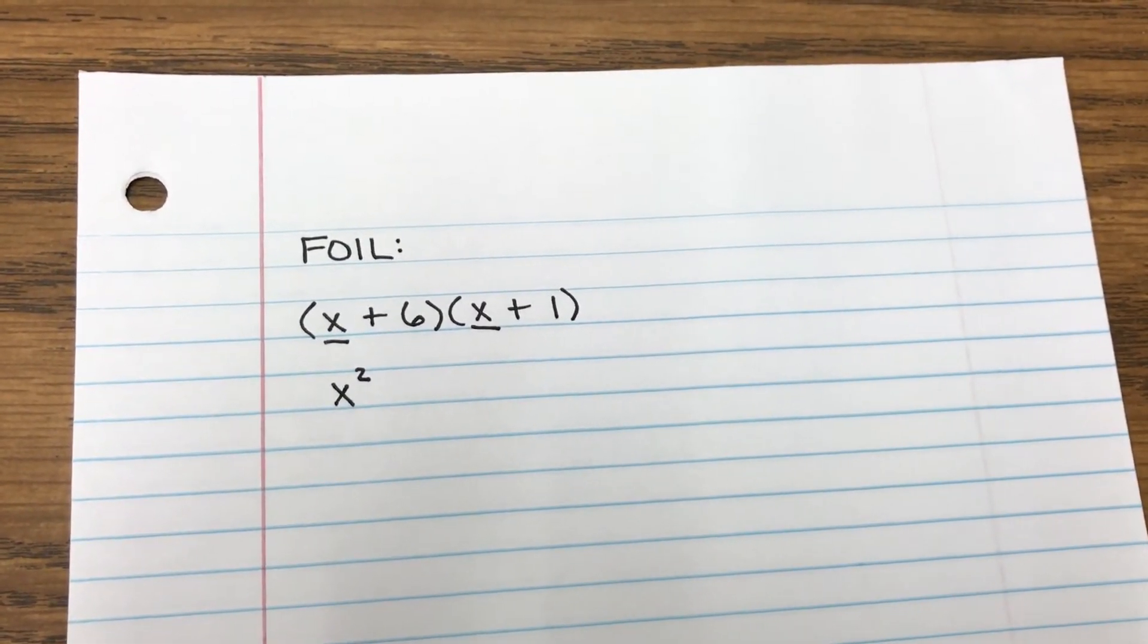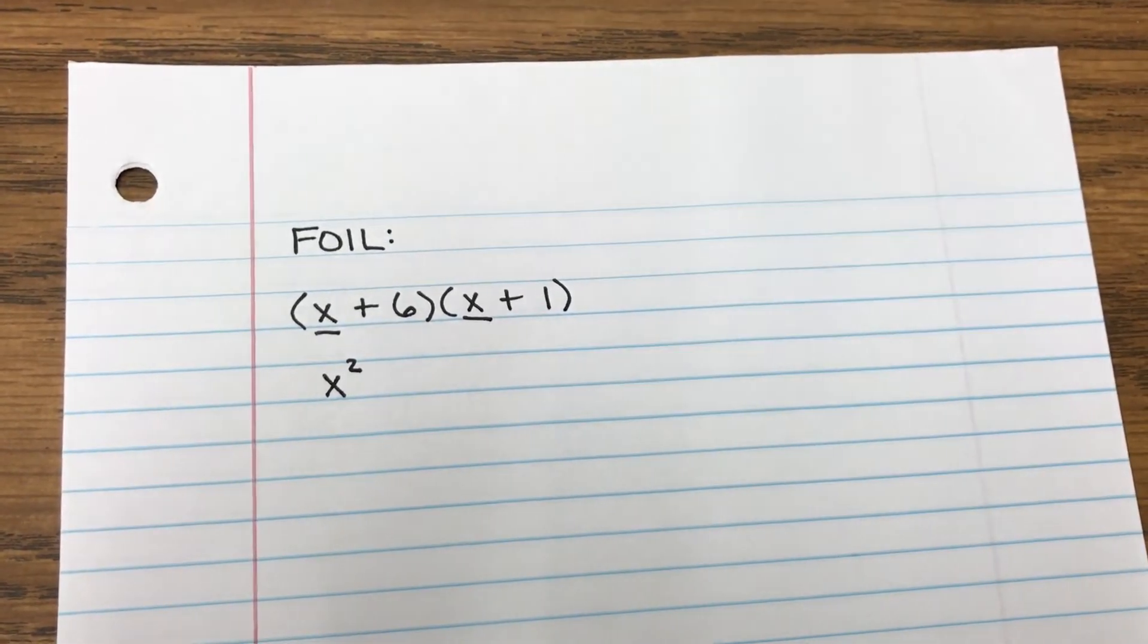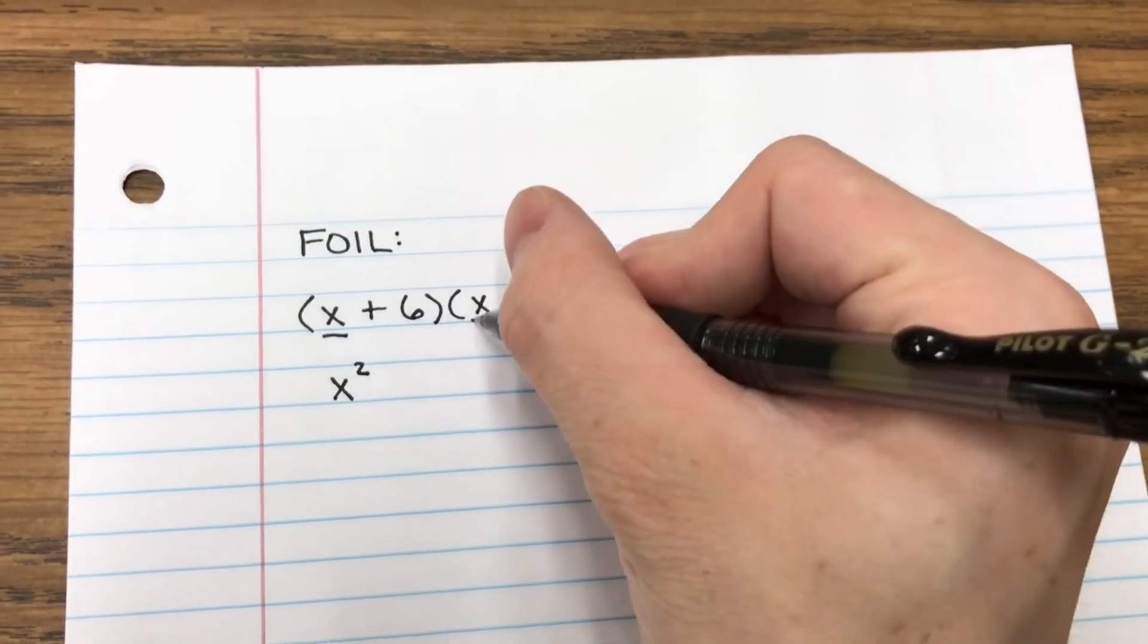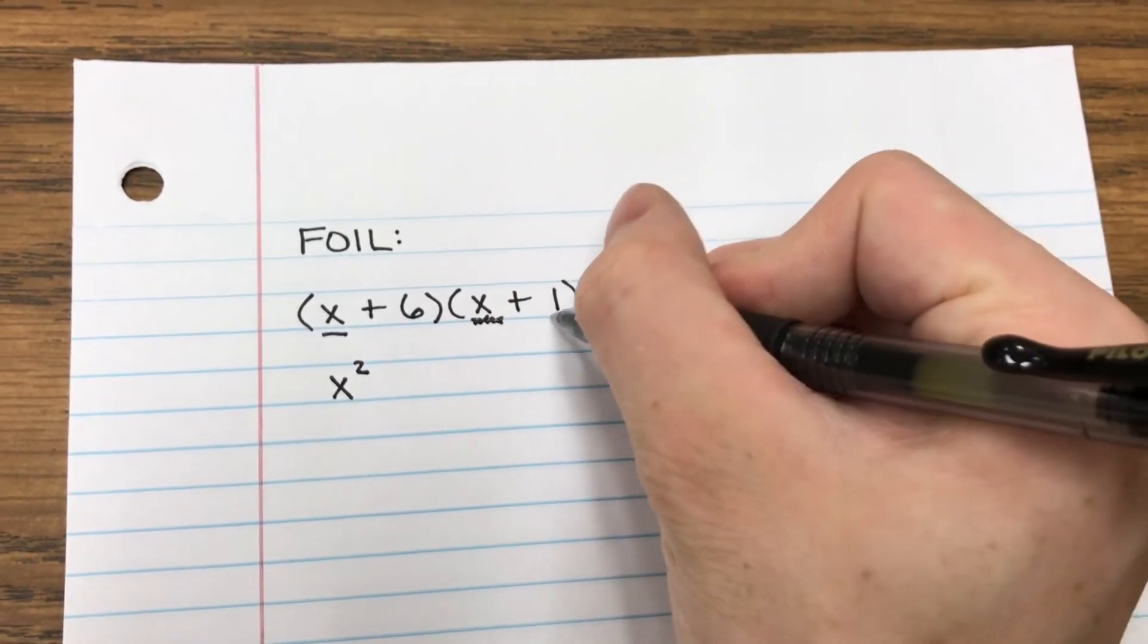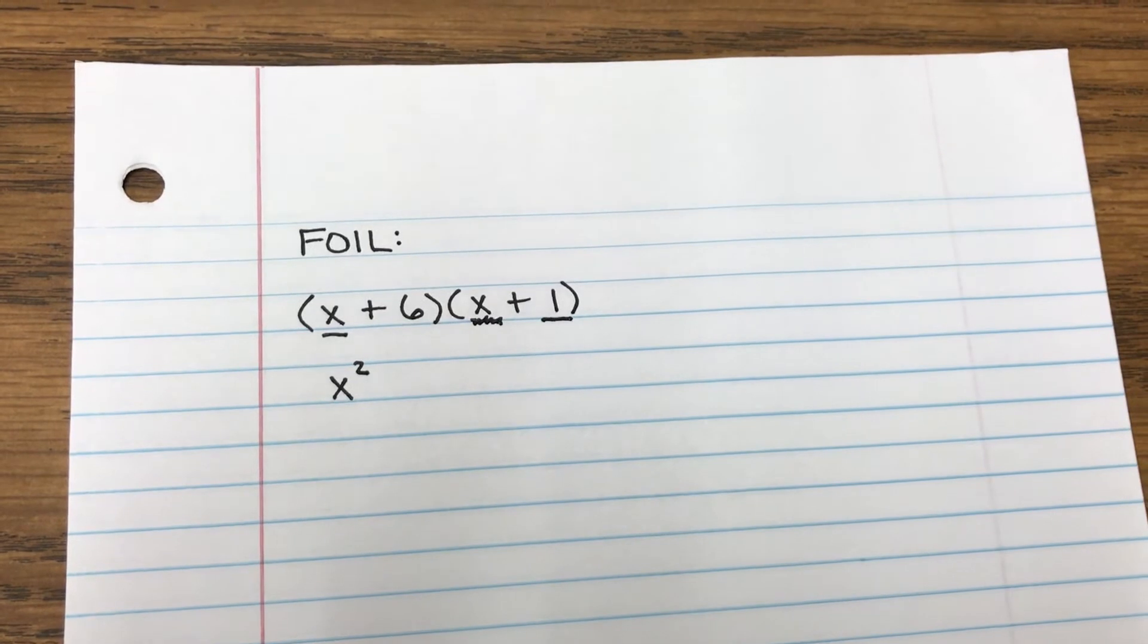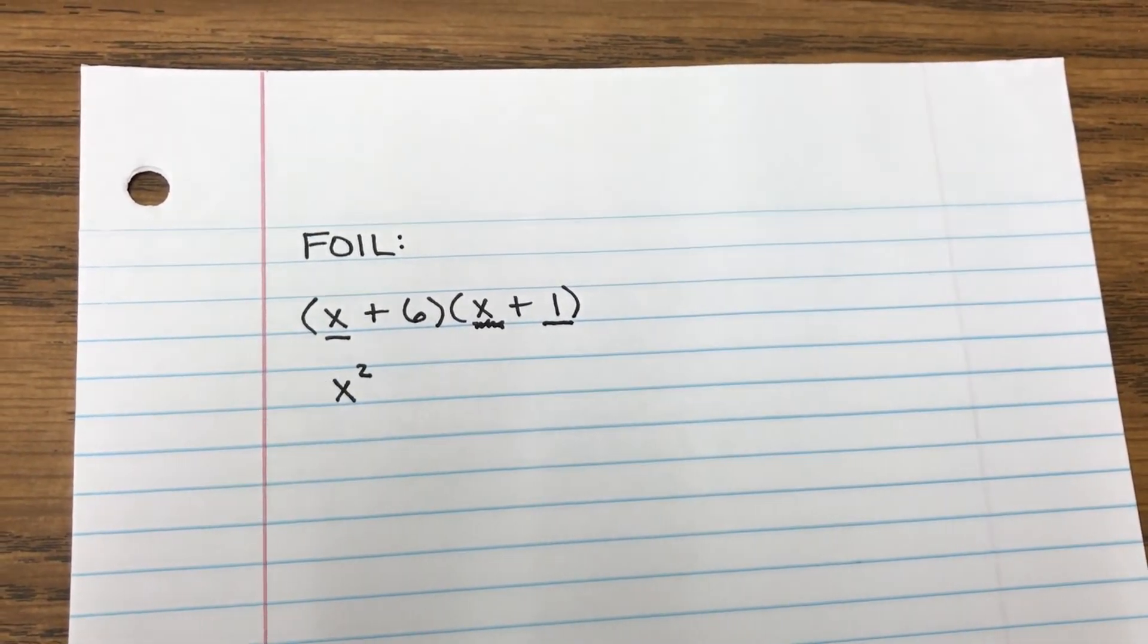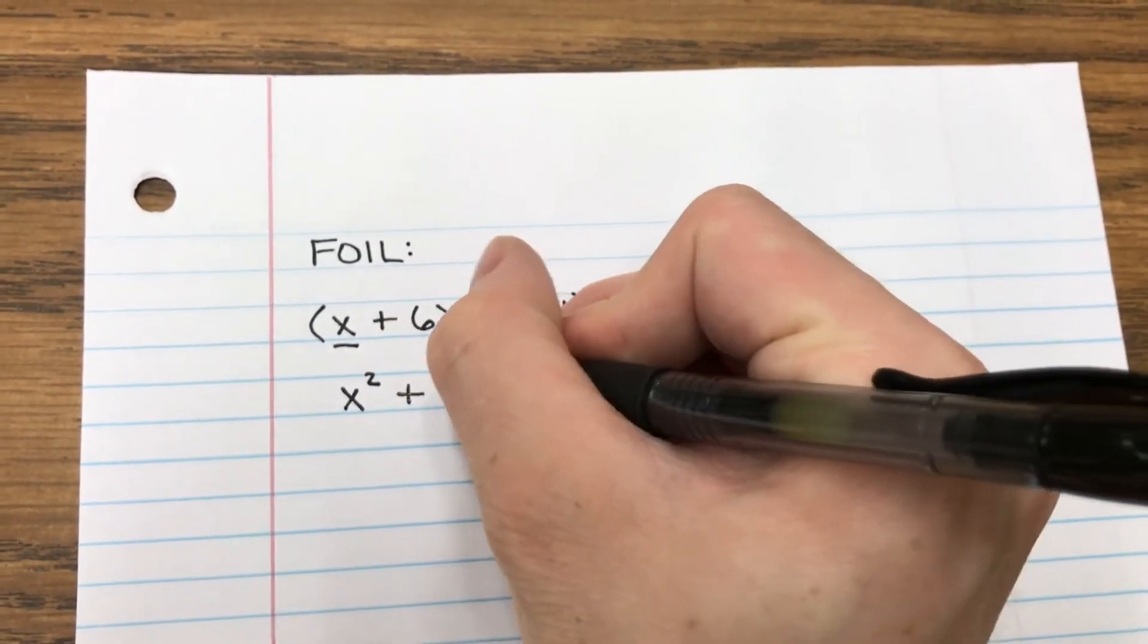Now let's go ahead and look at the O part of FOIL. That stands for outer, or outside. So what I'm going to do is, I'm going to get rid of this underline, and I'm going to put one under the one. These two are on the outer edges of the parentheses. So what's X times one? That would be just X. So let me write plus X.